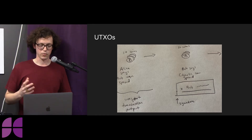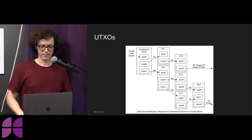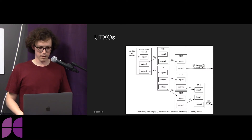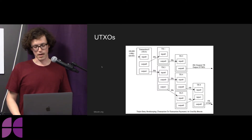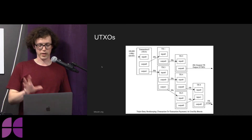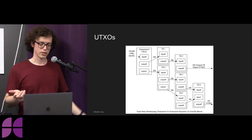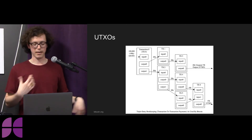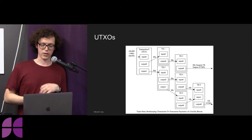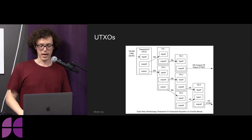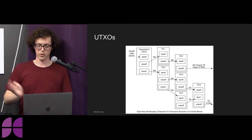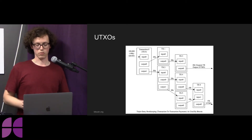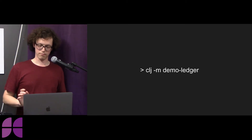Here's another diagram from the Bitcoin.org site showing in general this graph of transactions where you have many inputs, many outputs, and they can go to different places. One way to think about it is: you start at the genesis block, reduce this whole graph, and you end up with a ledger.